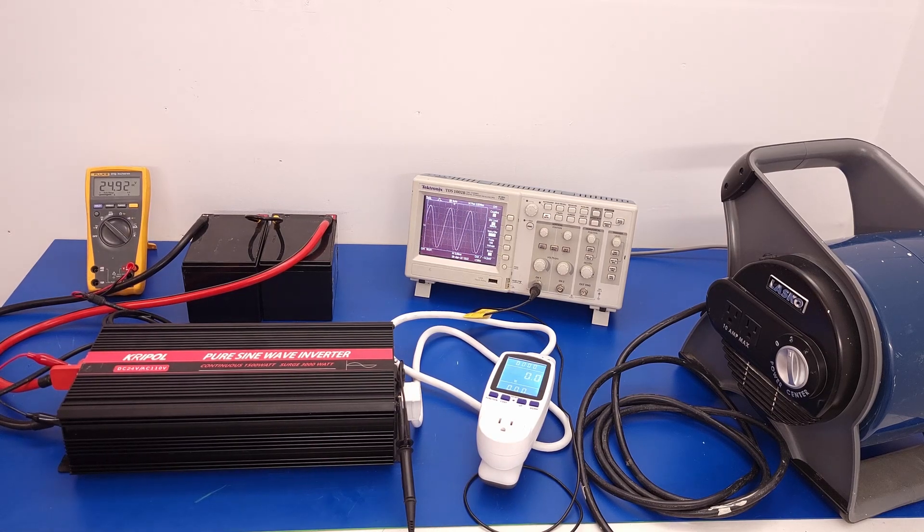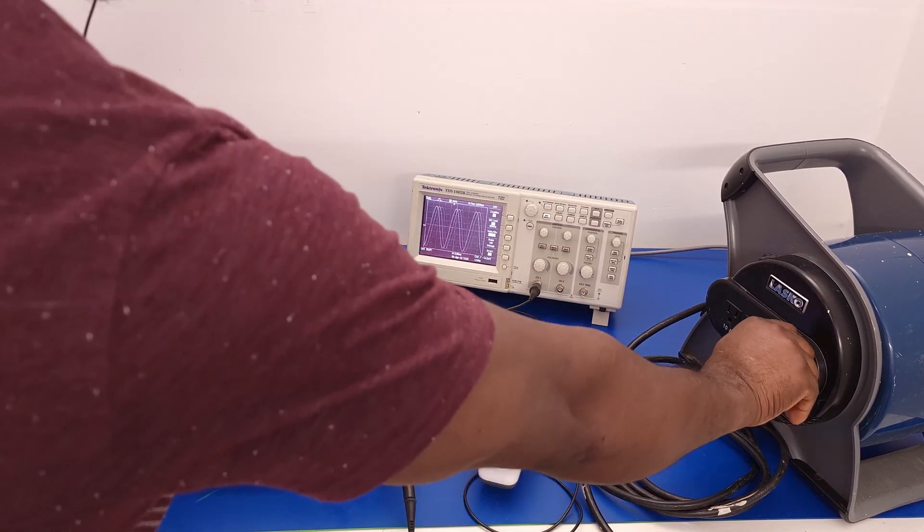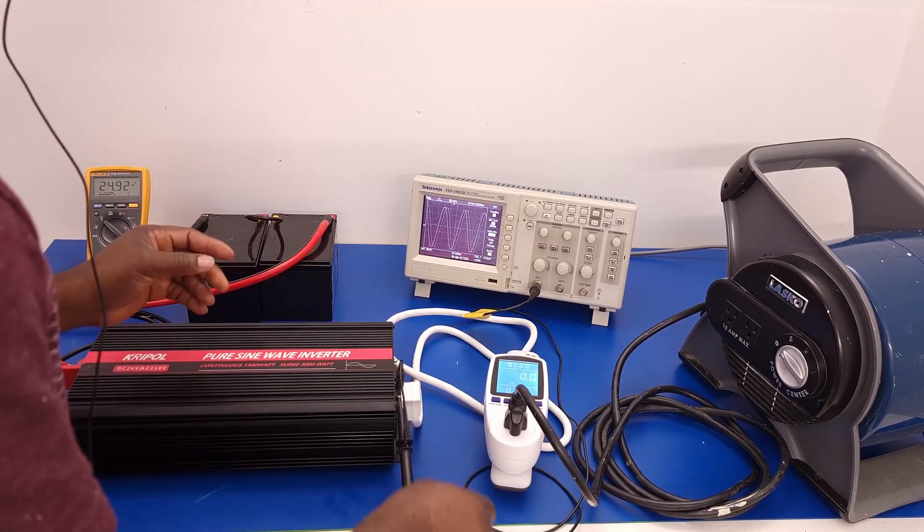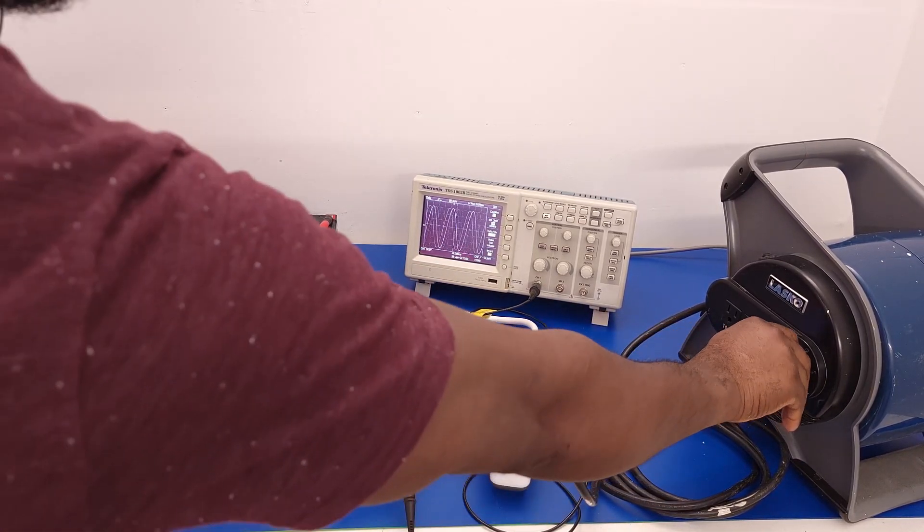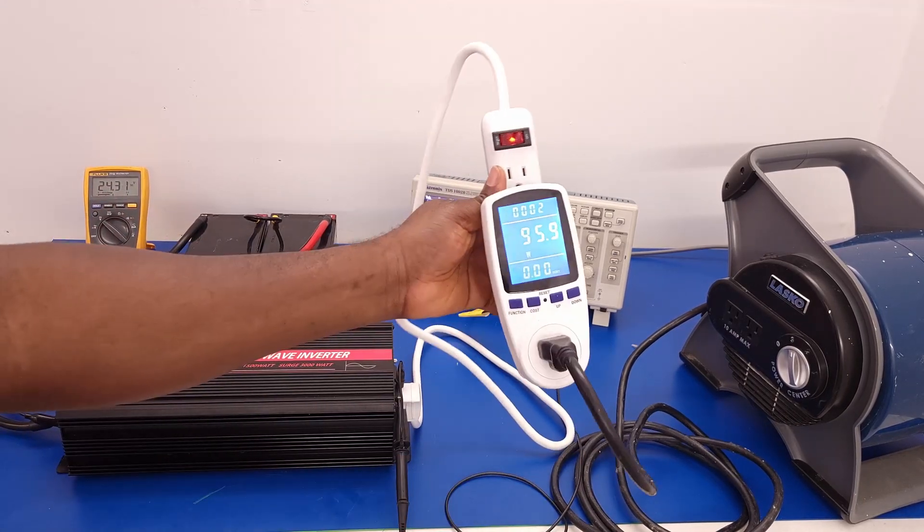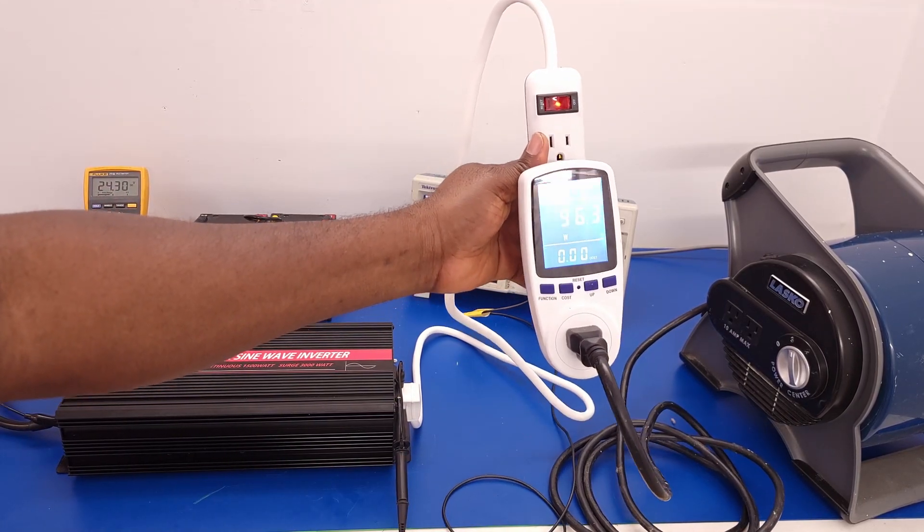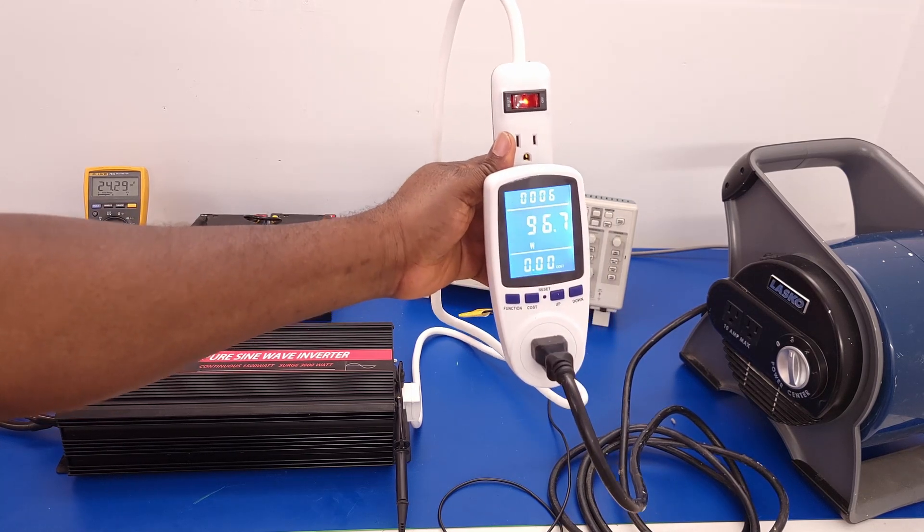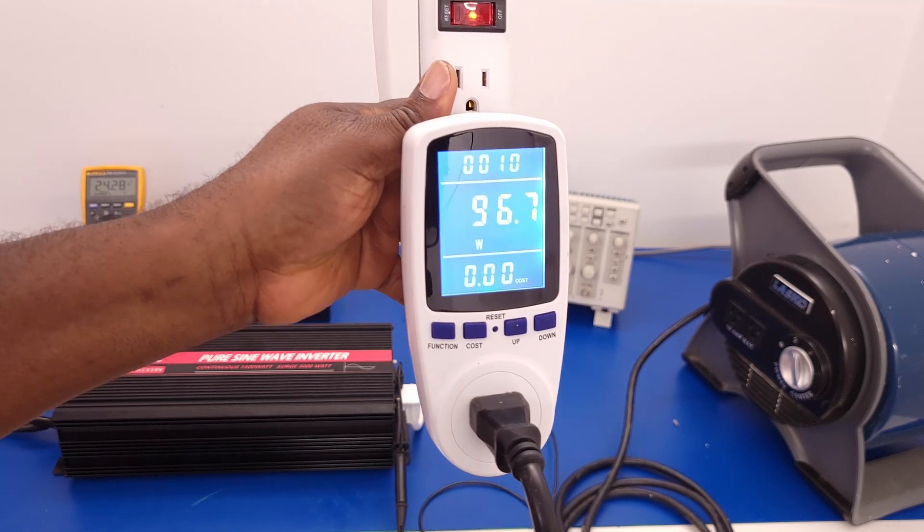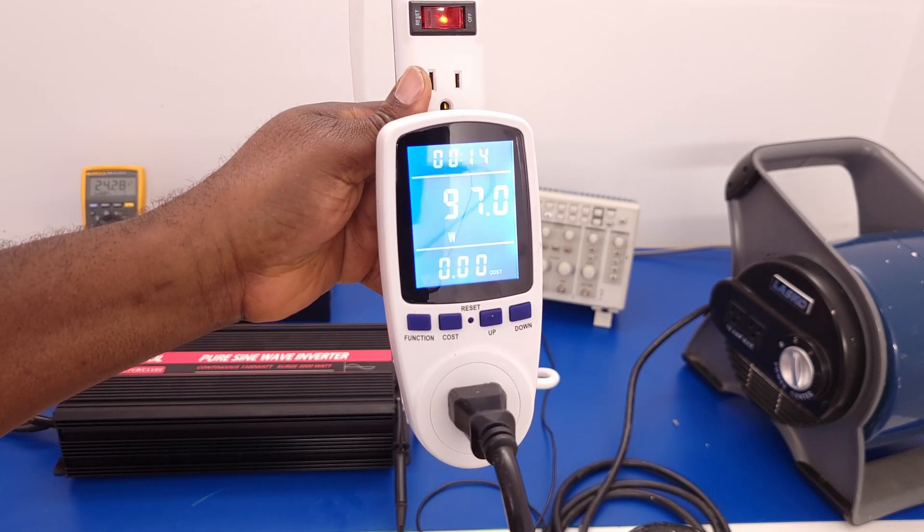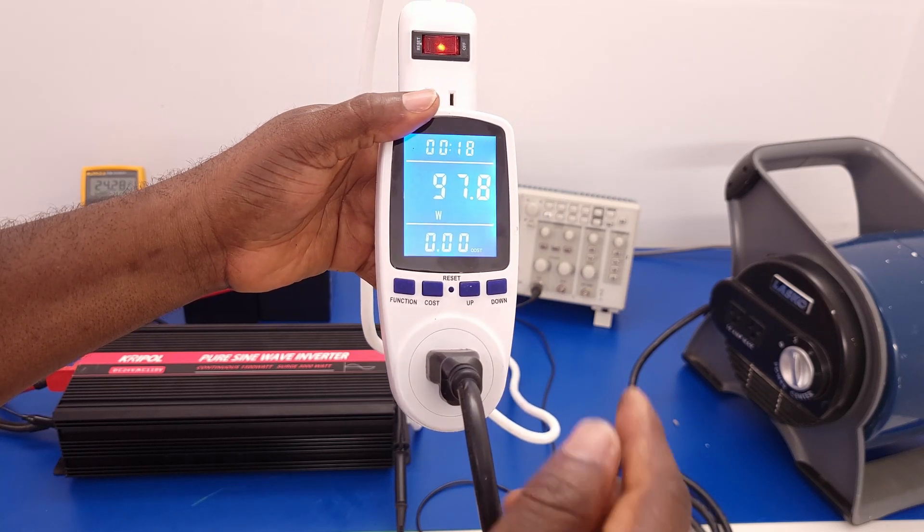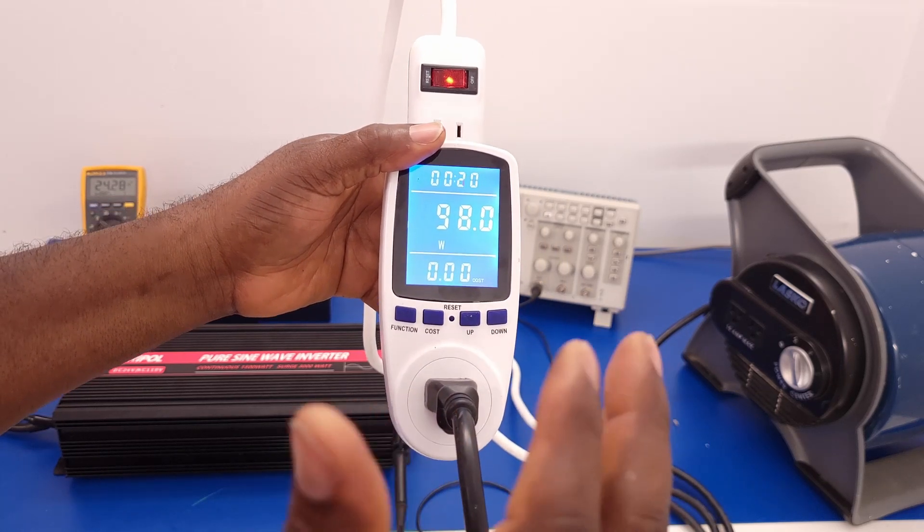We have an output but the fan is off. Let's go ahead and turn on the fan. The fan is not connected, so first we connect the fan. Now we turn on the fan. You can see at full speed the fan is drawing close to 97 watts of load there. As you can hear the fan is running very smoothly.